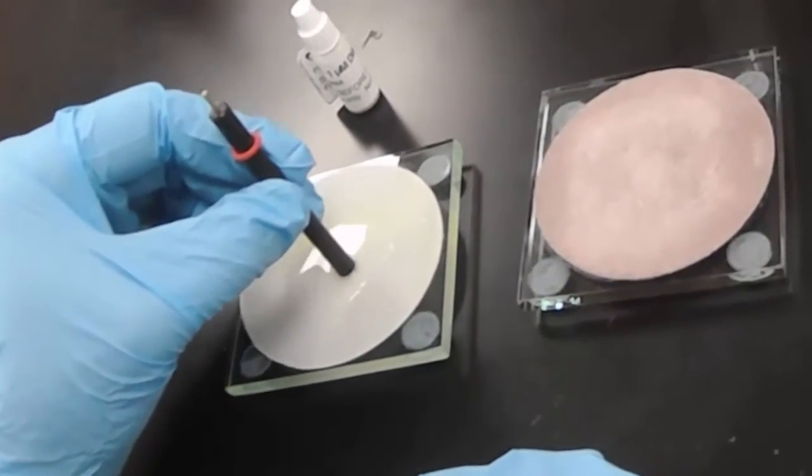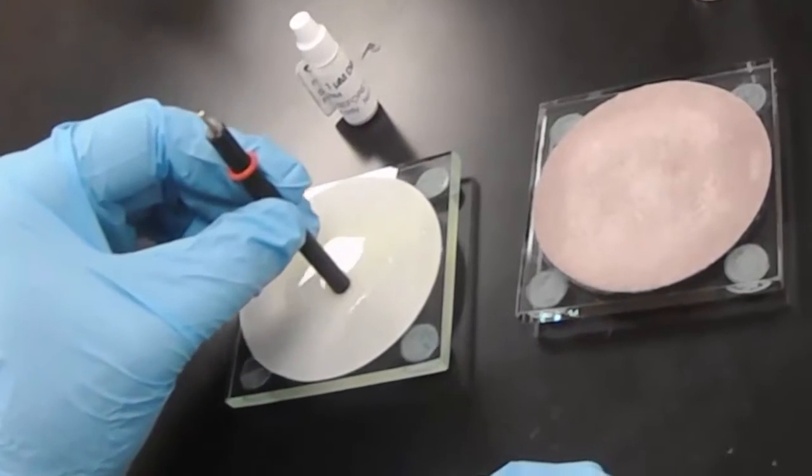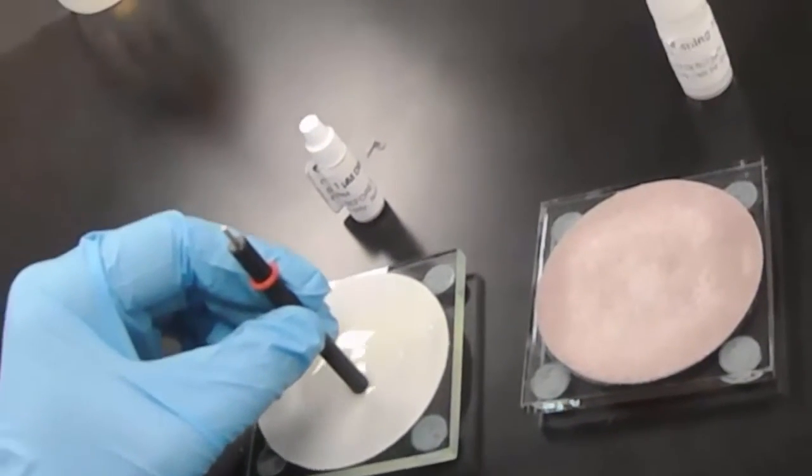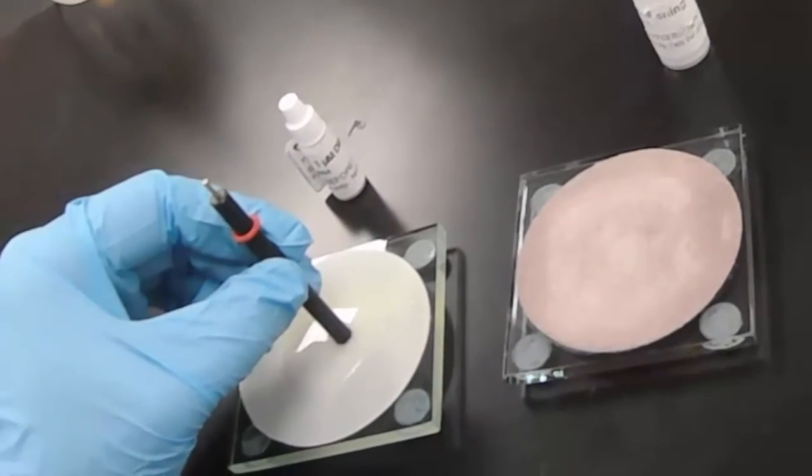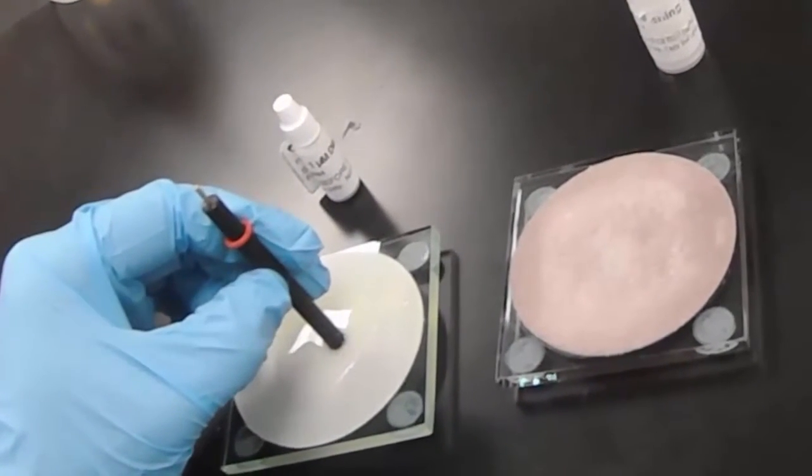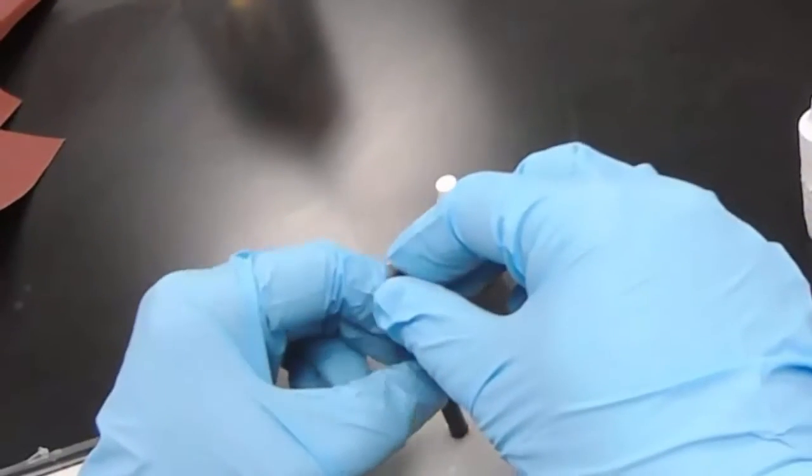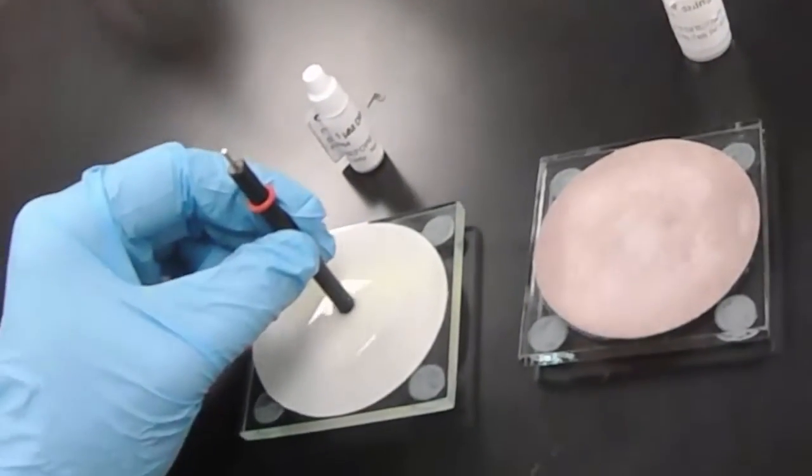And actually we should do a figure eight motion. So not just a circular motion, but a figure eight motion. And while we do that, every time we do a cycle, we should rotate our grip 90 degrees on the electrode. So we do another cycle, rotate 90 degrees.